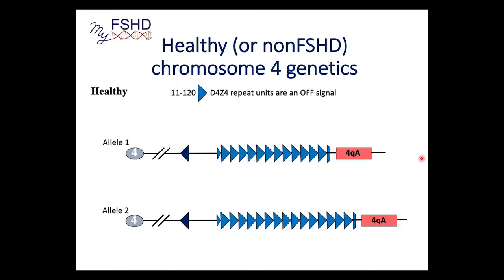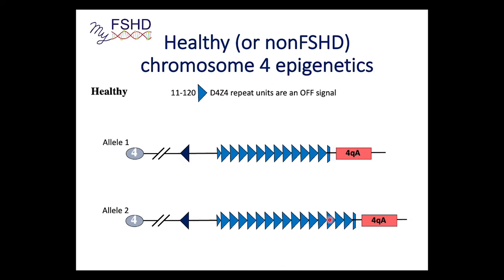Let's start with a healthy or non-FSHD chromosome 4. In healthy genetics, you have more than 10 repeats on both chromosome 4s — one from mom, one from dad, called alleles. Epigenetically, your genome will notice these are repetitive sequences — a lot of DNA repeated in a row, direct repeats, on both chromosomes — and will flag them to be turned off.